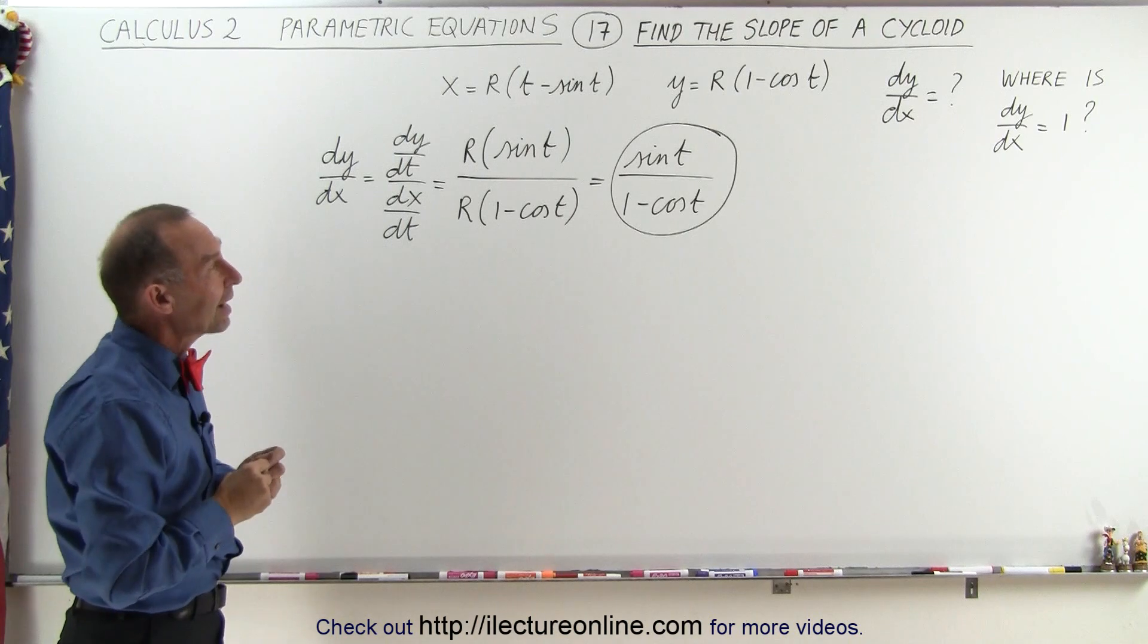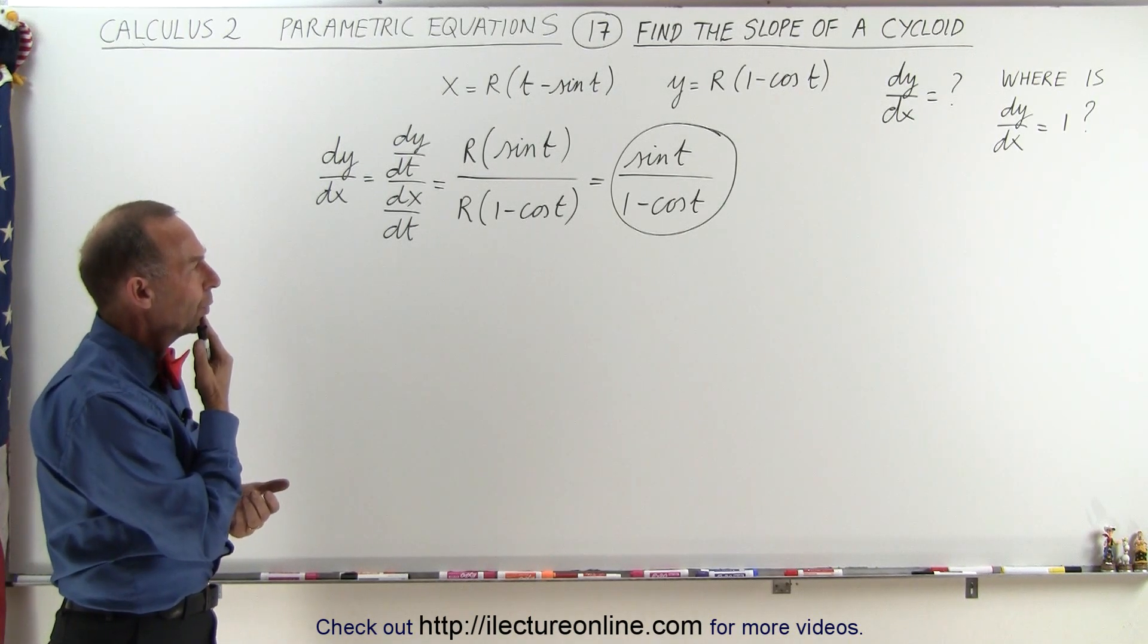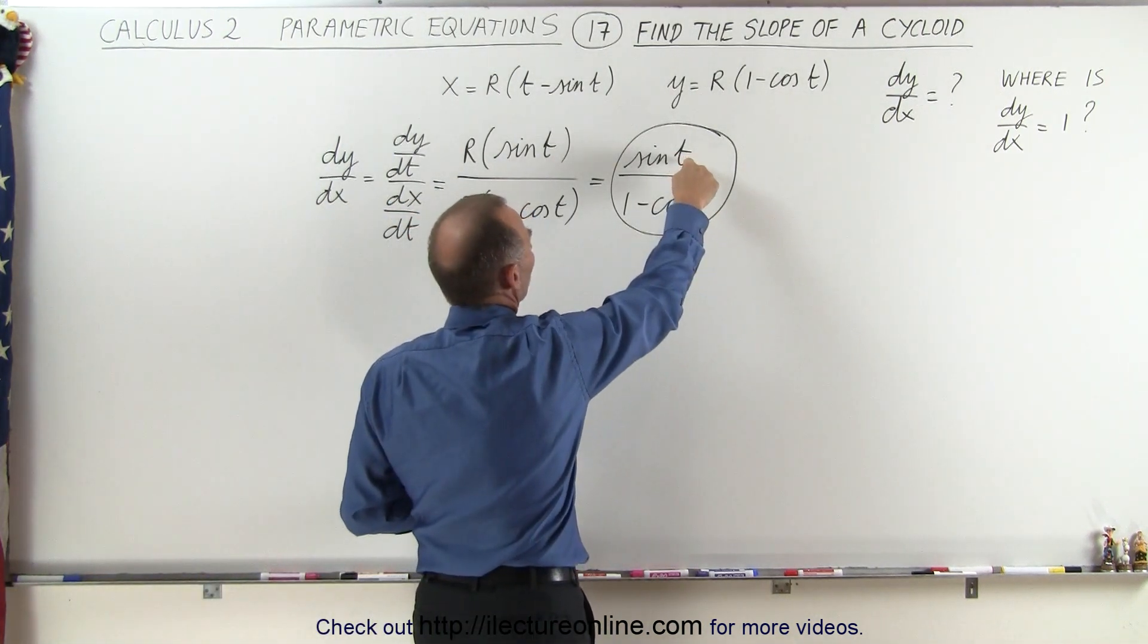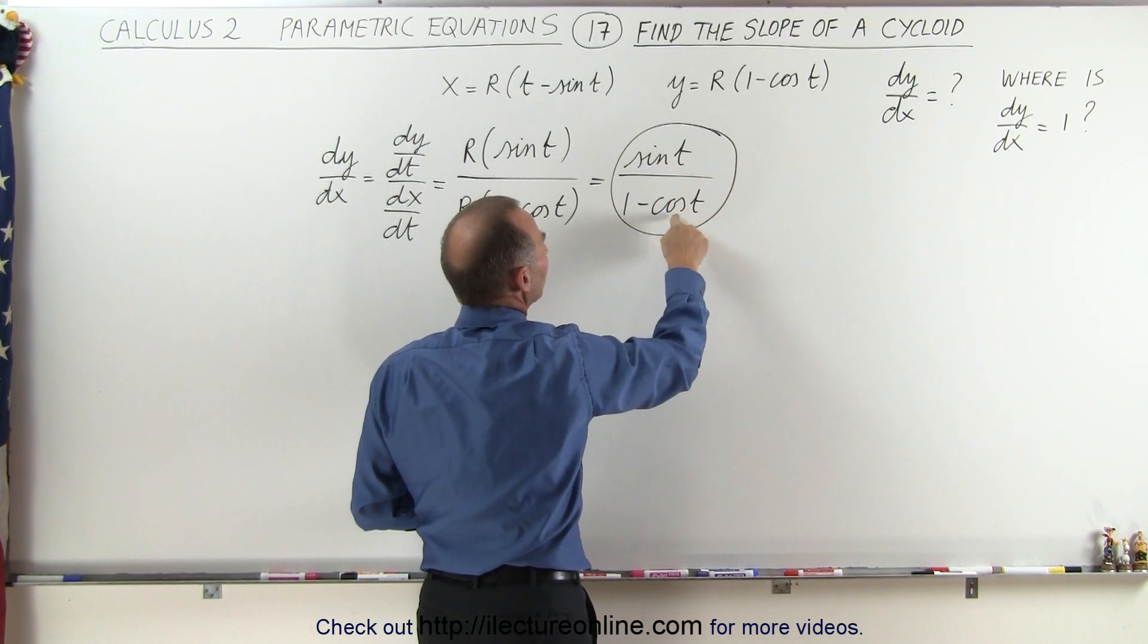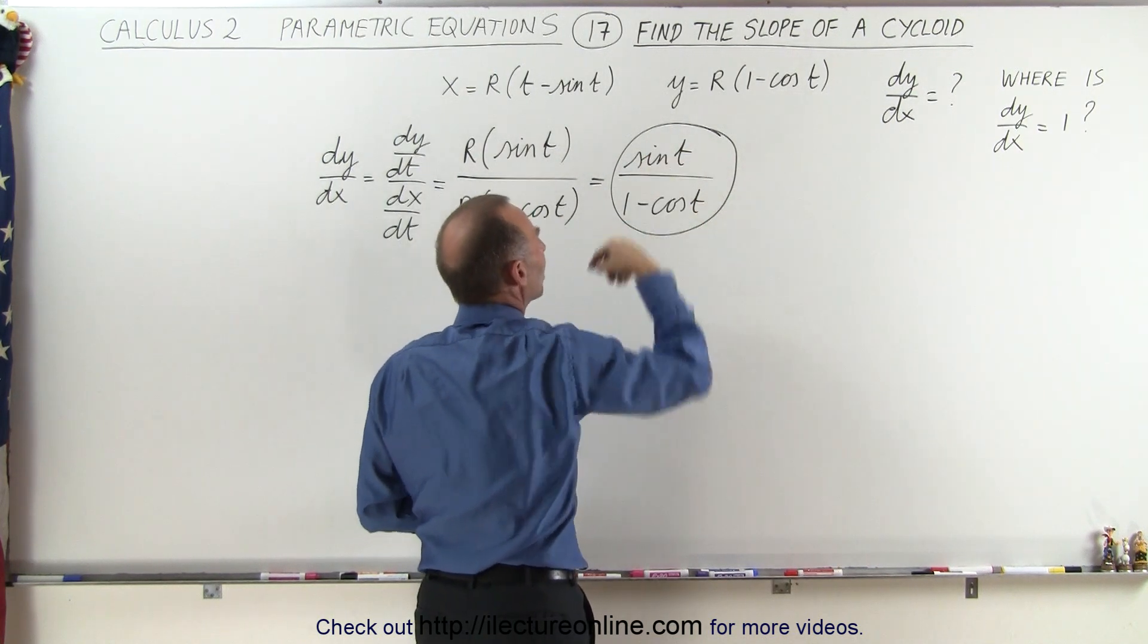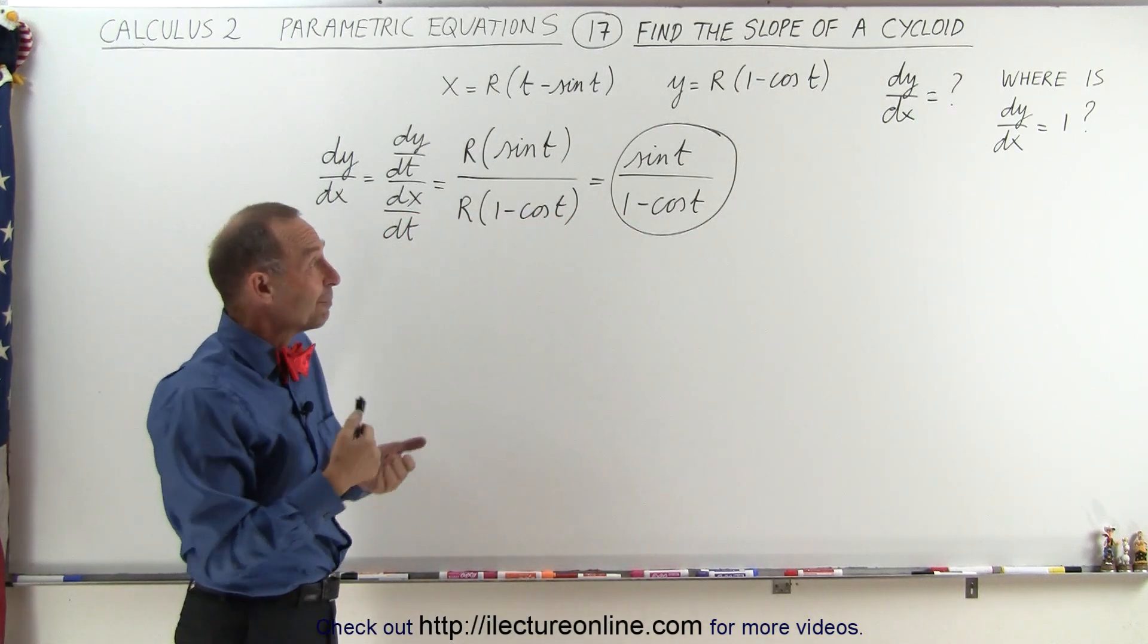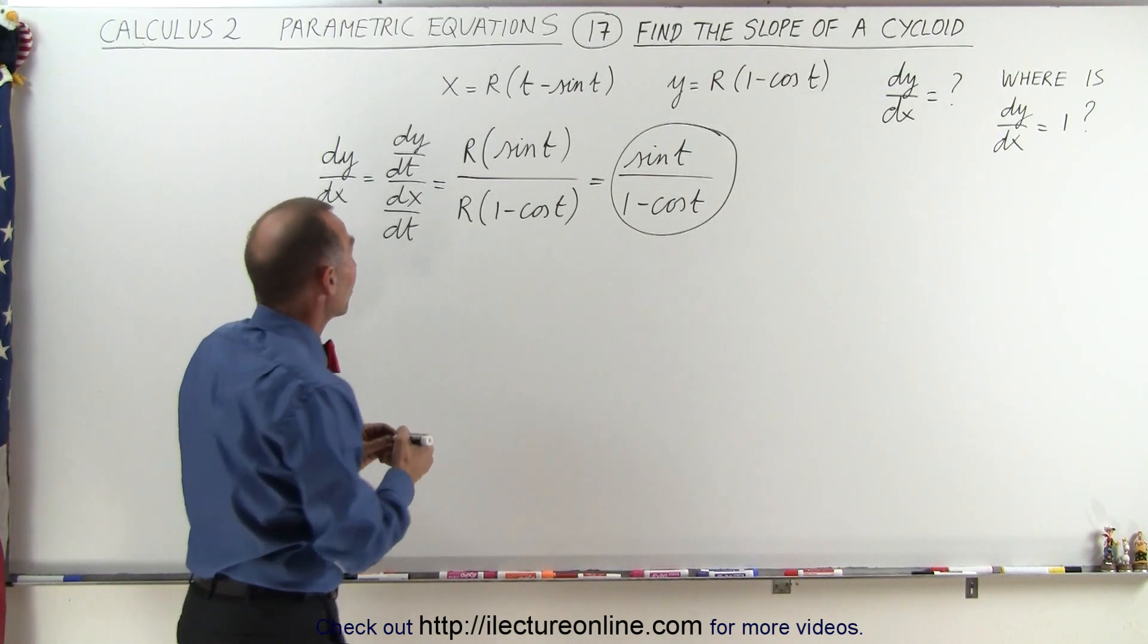Now we're trying to find where the derivative is equal to 1. So what we need to do here is think of some variable where the sine of t is equal to 1 and the cosine of t is equal to 0 because then we get 1 divided by 1. And I know that the sine of t is equal to 1 when we have pi over 2 and the cosine of pi over 2 is equal to 0. So that seems to work.